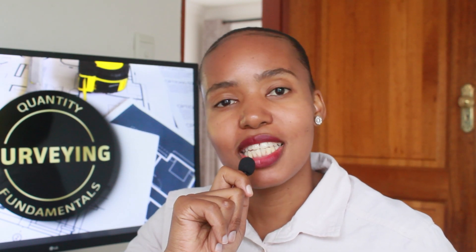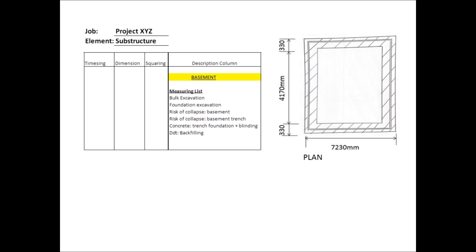Without further delay, let us jump right into the exercise. This is Project XYZ, and the element we are measuring is the substructure element. We have our takeoff list, and as per the list we'll focus on taking off quantities for bulk excavations, foundation excavations, risk of collapse to the basement, risk of collapse to the basement trench, concrete to our foundation footing plus the blinding, and then we will deduct or adjust for the backfilling.